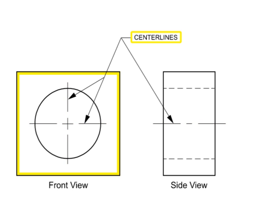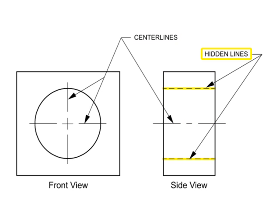On a front view, center lines cross without voids. A center line can also mark the center of a hole on a side view. Hidden lines are used to show the extent the hole reaches into the part.